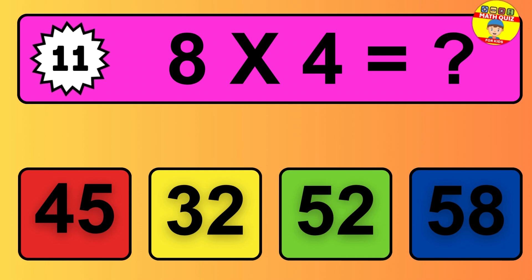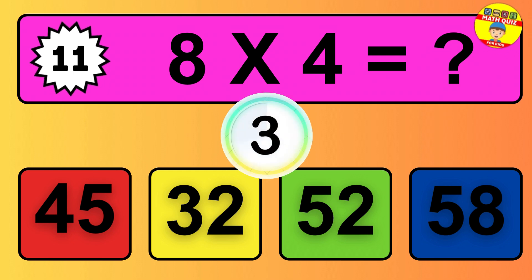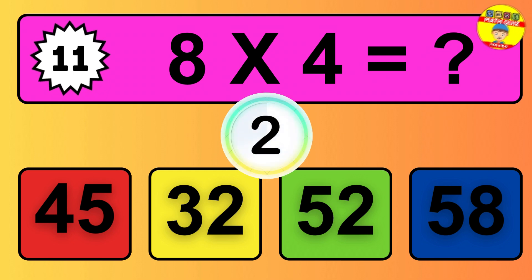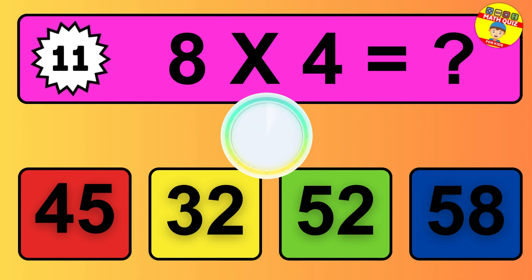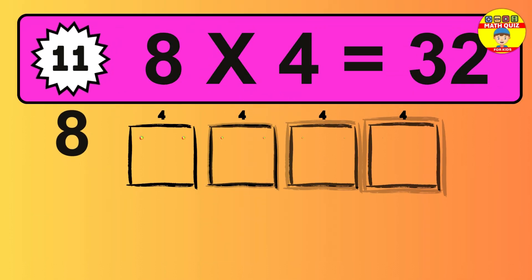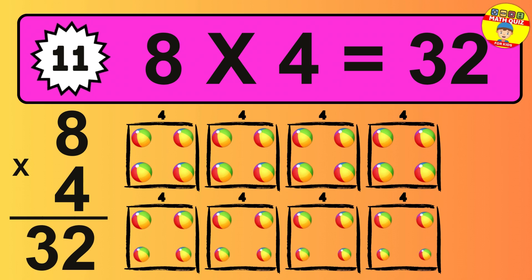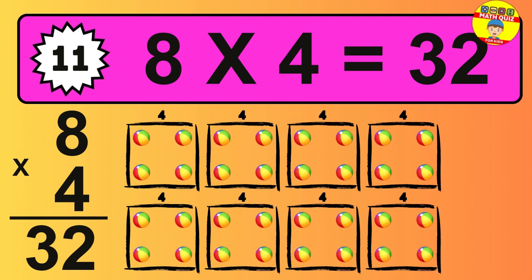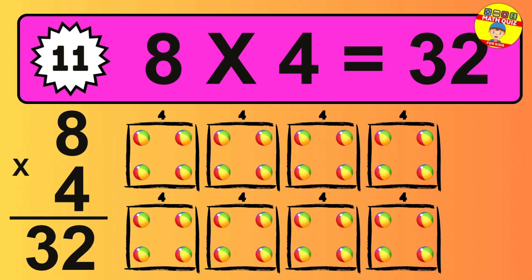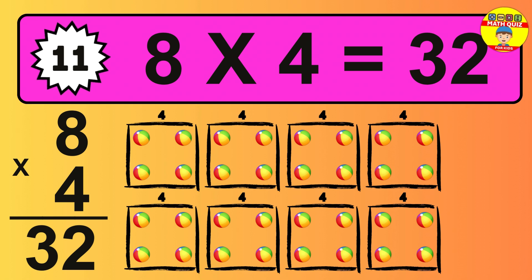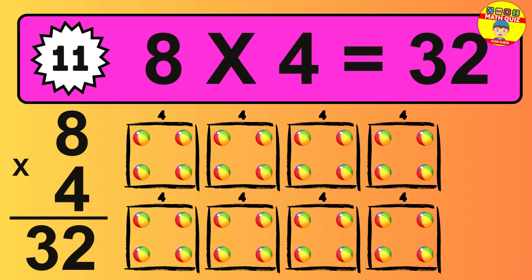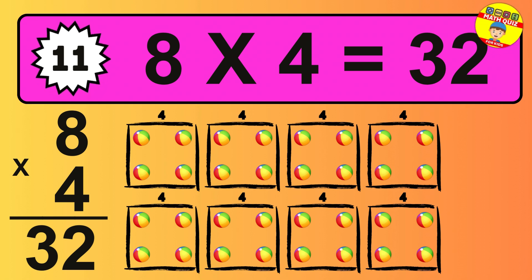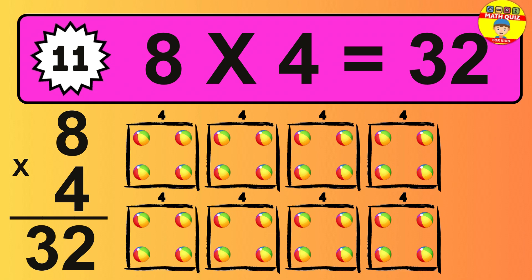Question 11. 8 times 4 equals what? The answer is 8 times 4 is 32. To calculate, we have 8 groups with 4 balls each one. So how many balls do we have? 32 balls.